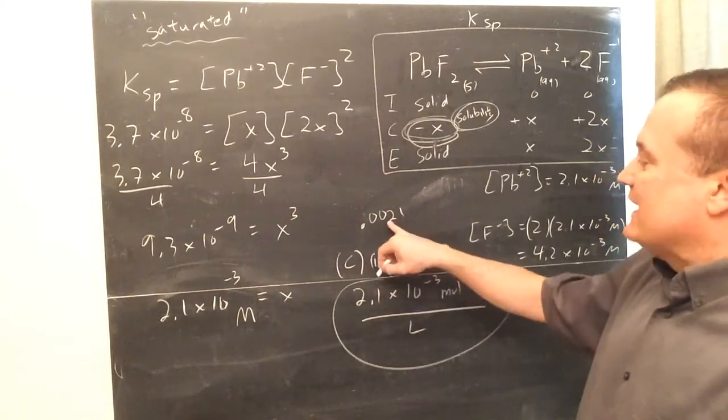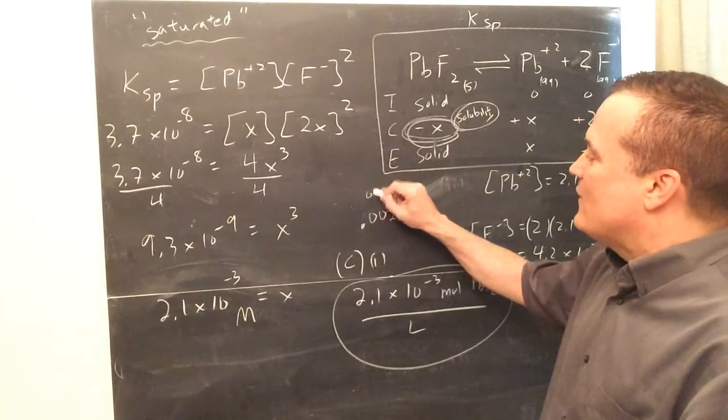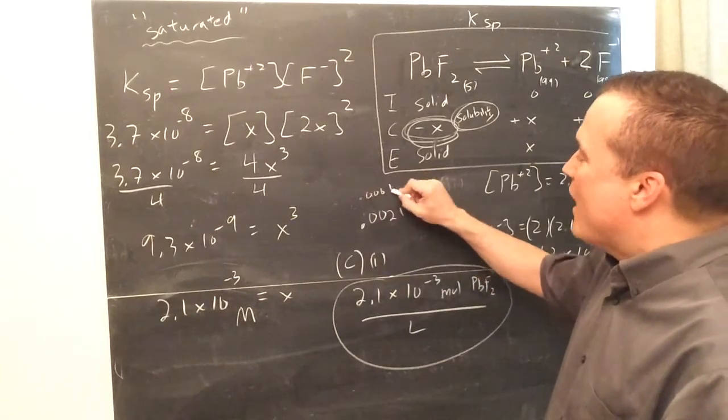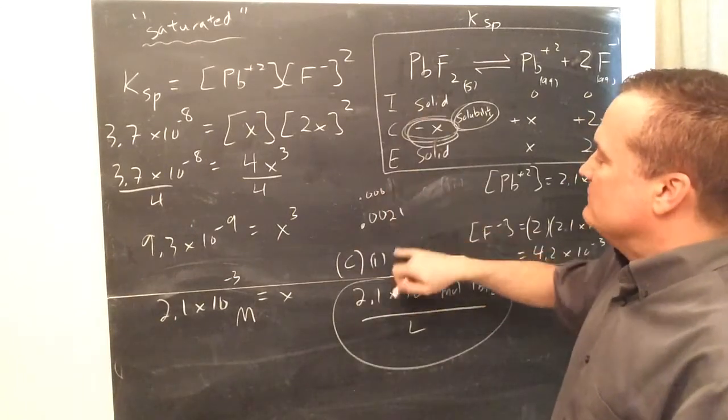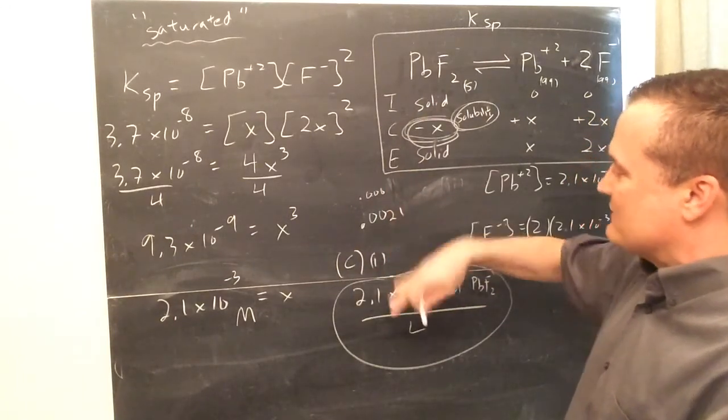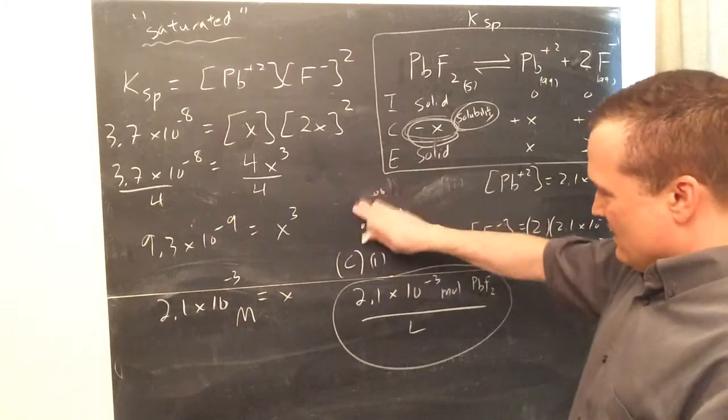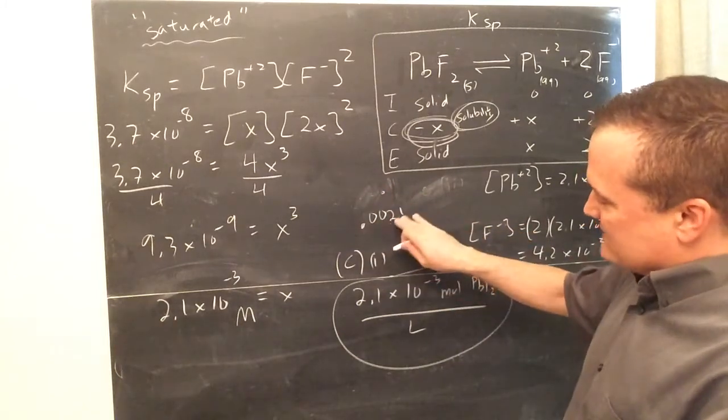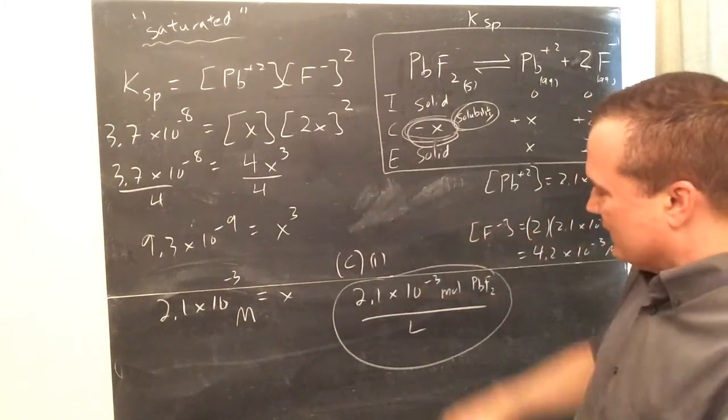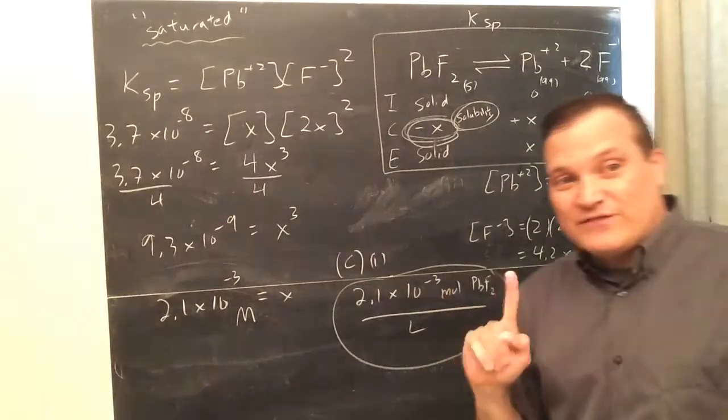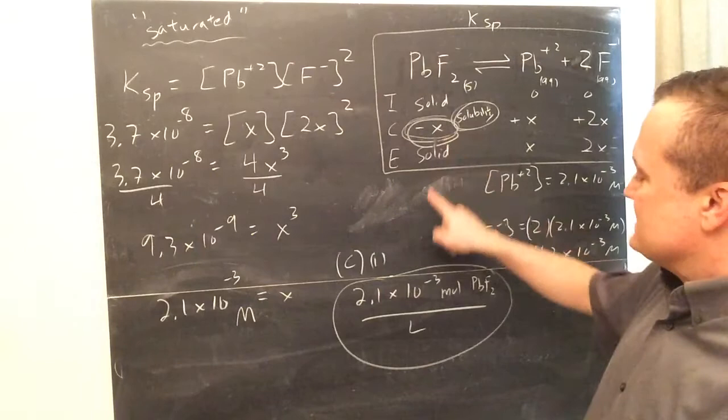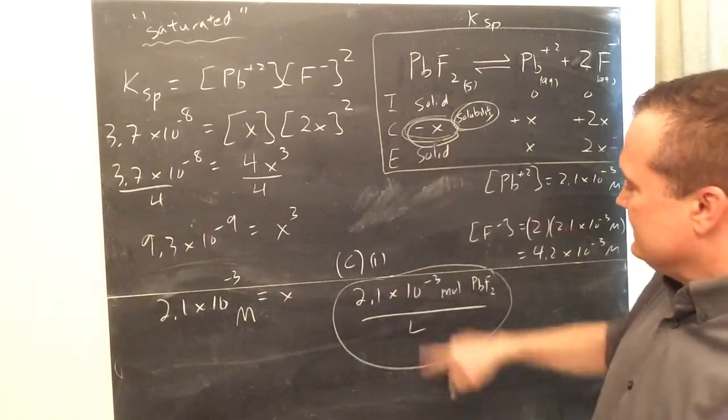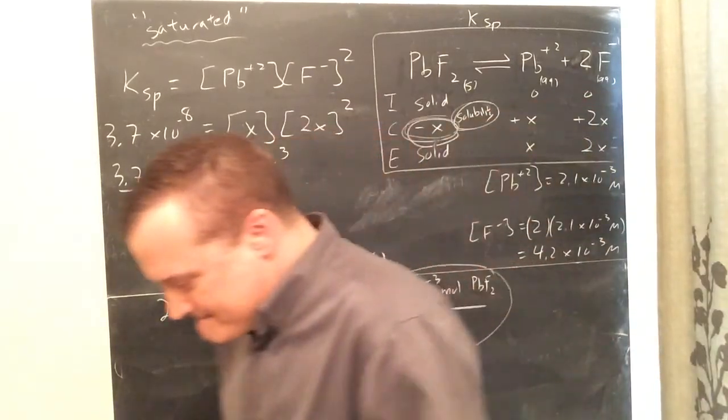So if I had less than that, if I only put in 0.0011, well then all of it would dissolve and there'd be no solid. If I put more than this moles, well then some of it would be solid and, you know, only that much can maximum can dissolve in one liter. So this is a very important thing you'll calculate. It's called the solubility. That's the solubility of 2.1×10 to the negative 3.